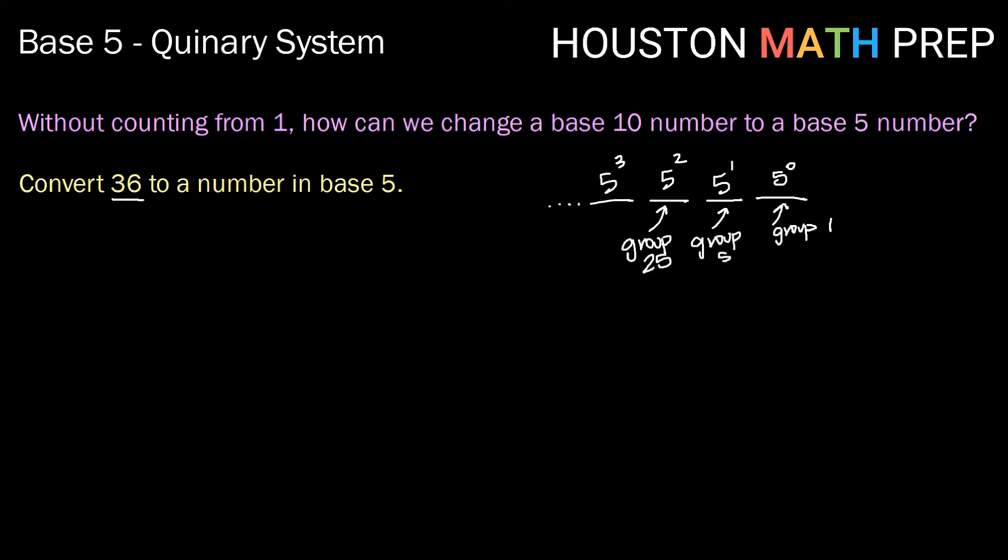So what we want to do in this first method is look at 36 and think about what's the highest power of 5 that goes into 36. Well, in this case that is 25. So we're going to go ahead and think of 36 as 25 plus 11. Then we're going to take this 11 and think about it in terms of how many groups of 5 can go into that. Well, there are 2 groups of 5 plus 1 left over. So now we can think about, okay, we have 1 group of 25 plus 2 groups of 5 plus 1 group of 1. So if we take the number of groupings, that will be our number in base 5. So 36 in base 10 is the number 121 base 5.